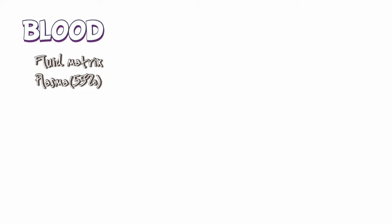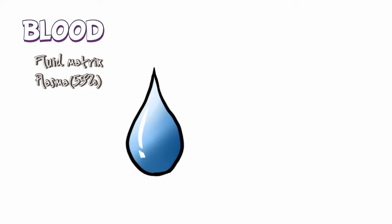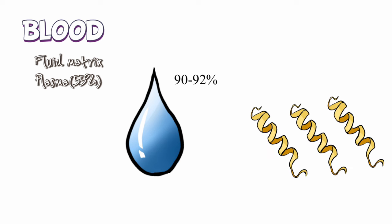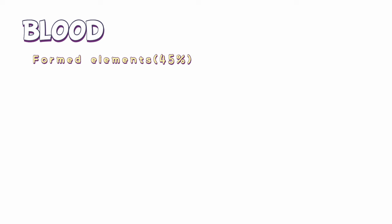Plasma is a viscous fluid that constitutes nearly 55% of blood. Water constitutes 90–92% of plasma and proteins make up 6–8%. Formed elements constitute 45% of blood.